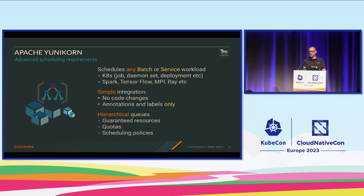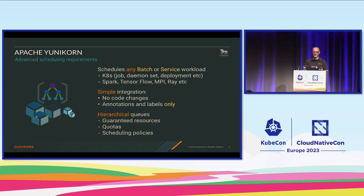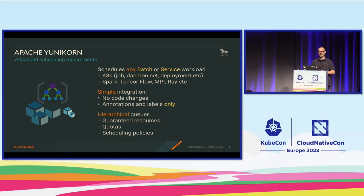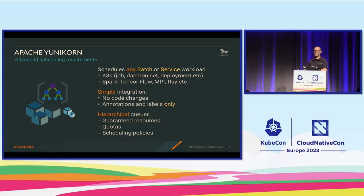Apache Yunikorn schedules whatever you give us. We put an application abstraction on top of existing pod objects — applications, daemon sets, whatever you want to run on a Kubernetes layer. We also allow you to easily run Spark jobs, TensorFlow jobs, MPI jobs, and more, without needing to change the underlying framework to submit your jobs.